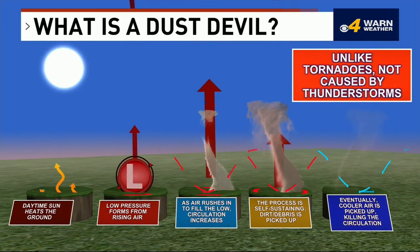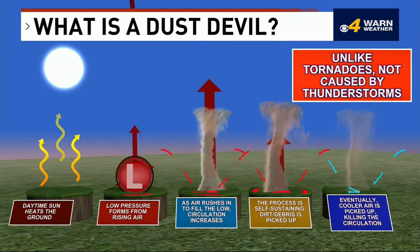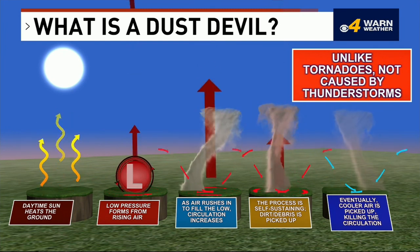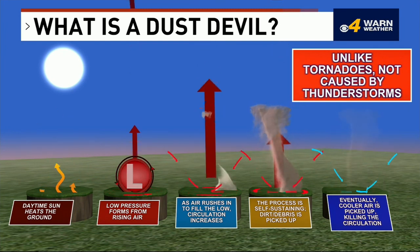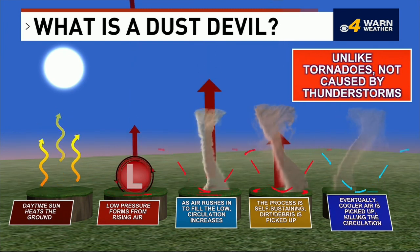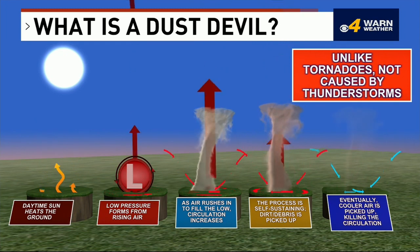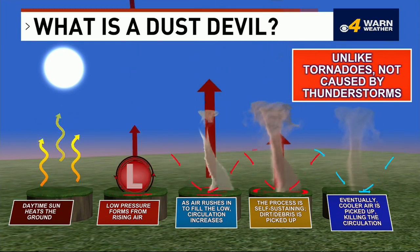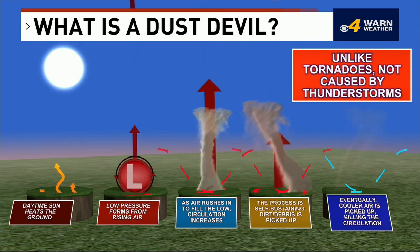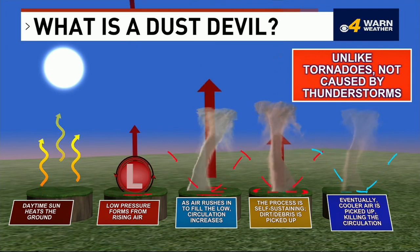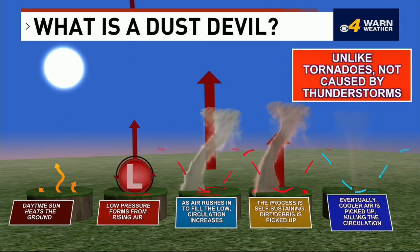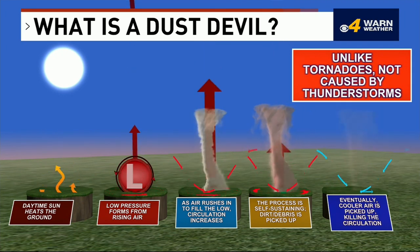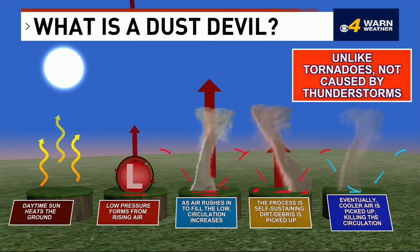Eventually, the air does cool down and it kills the circulation. But unlike a tornado, dust devils are not actually caused by thunderstorms. They're also much smaller than twisters, only ranging between 10 and 300 feet in diameter, and are only about 500 to 1,000 feet tall.